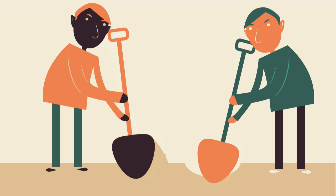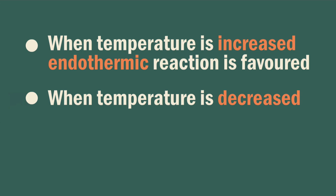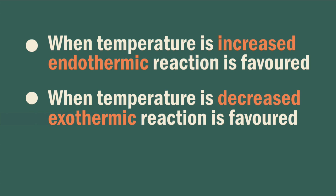In conclusion, when the temperature of a system at equilibrium is increased, the endothermic reaction is favored. When the temperature of a system at equilibrium is decreased, the exothermic reaction is favored. Adding a catalyst has no effect on the position of equilibrium.